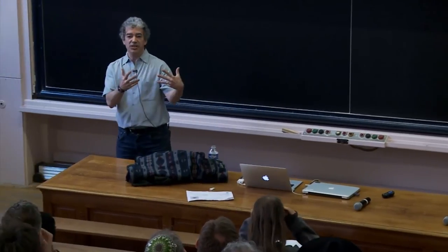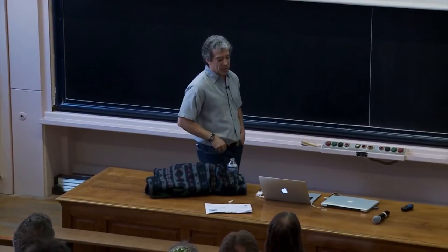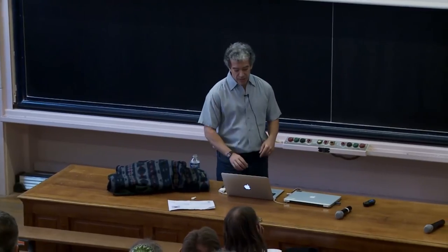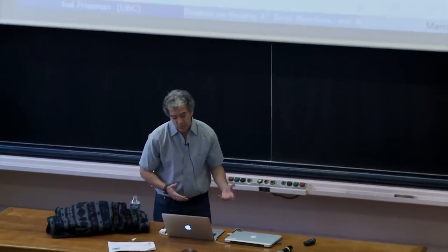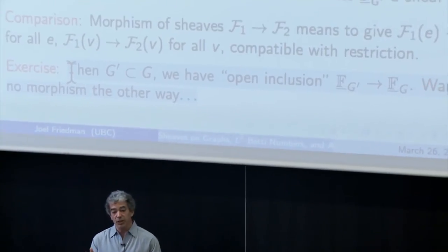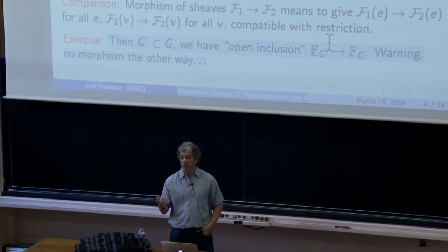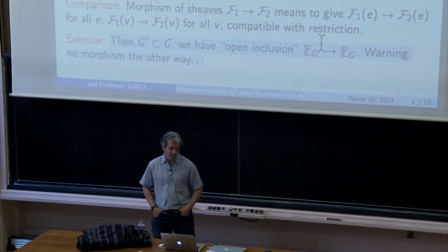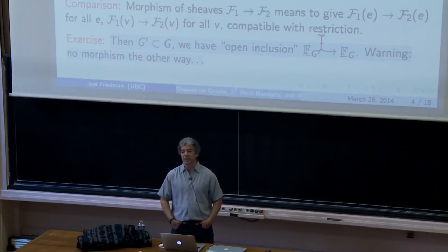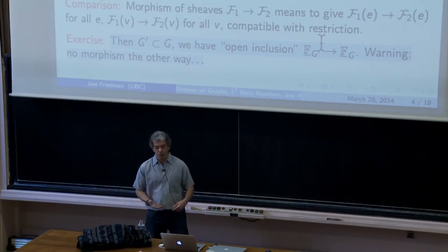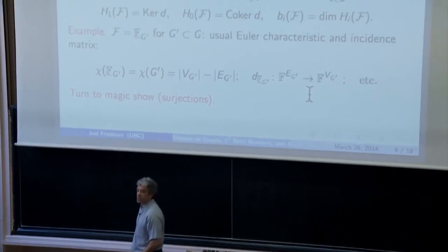When you first start looking at sheaf theory and these ideas in a discrete space, they are kind of strange. One exercise is: if you have a subgraph of a graph, then you have an inclusion map from the constant sheaf restricted to the subgraph into the graph — this is a so-called open inclusion. But the morphism does not go the other way. There are maps of spaces back and forth, but they won't be compatible with the restrictions.